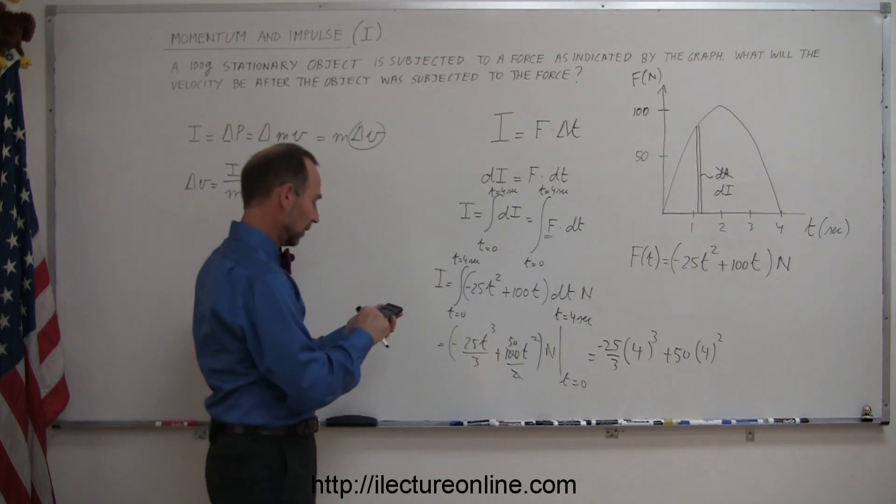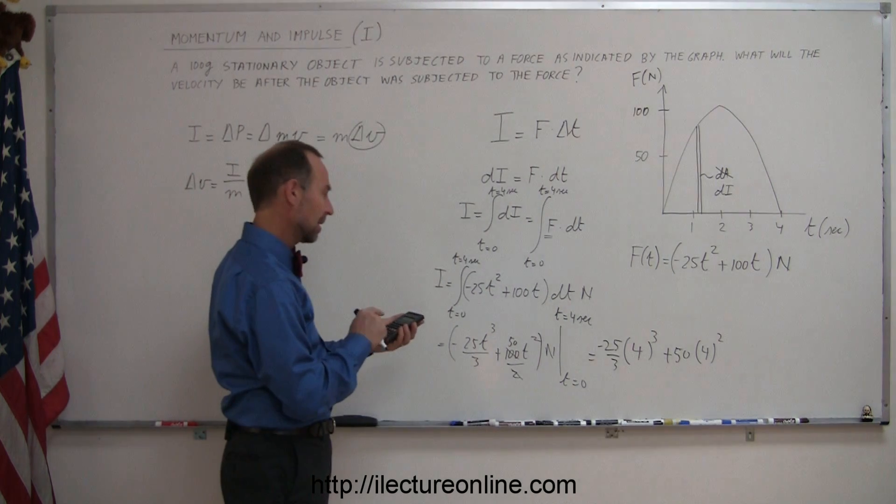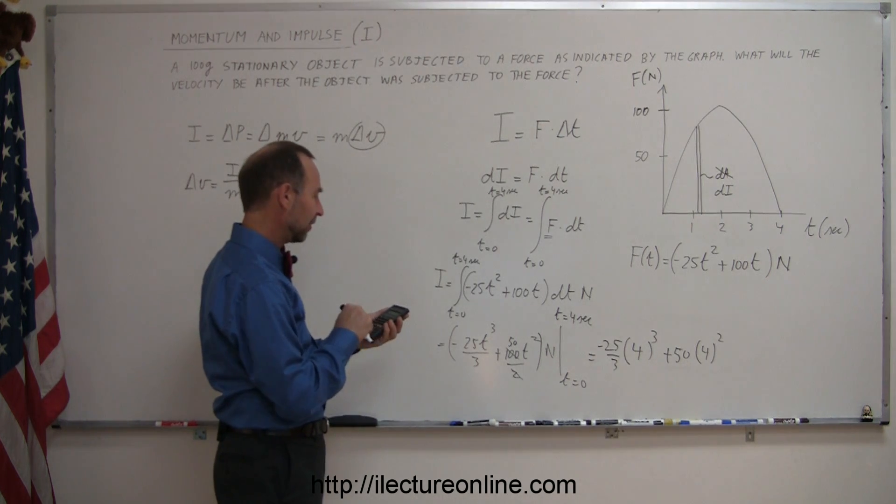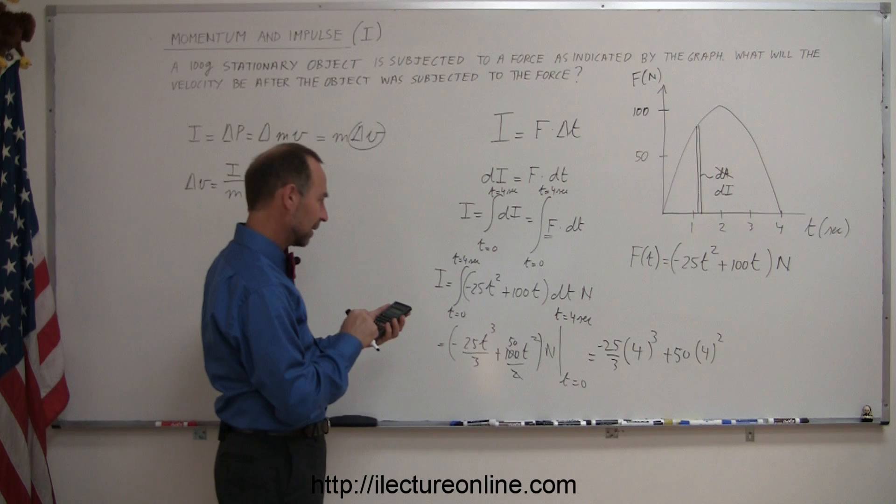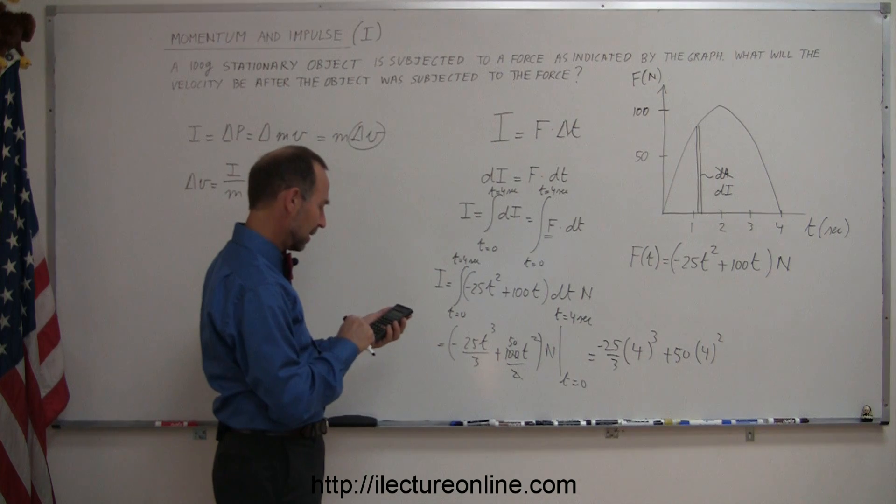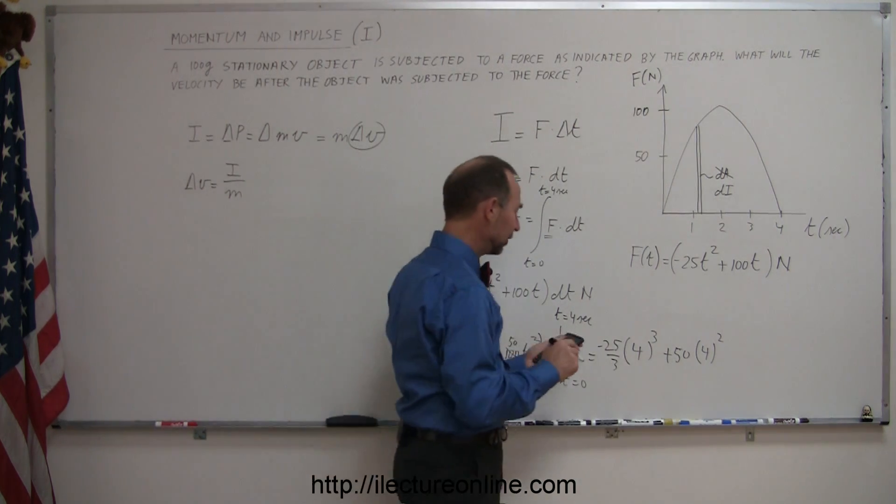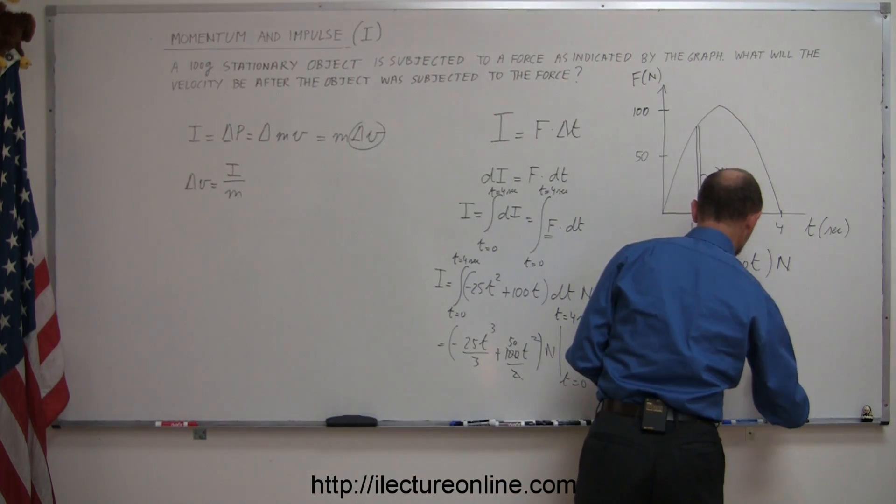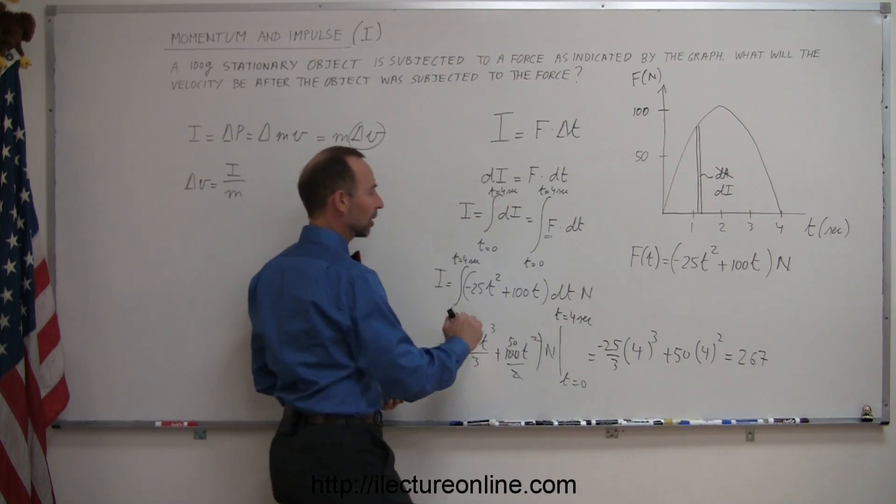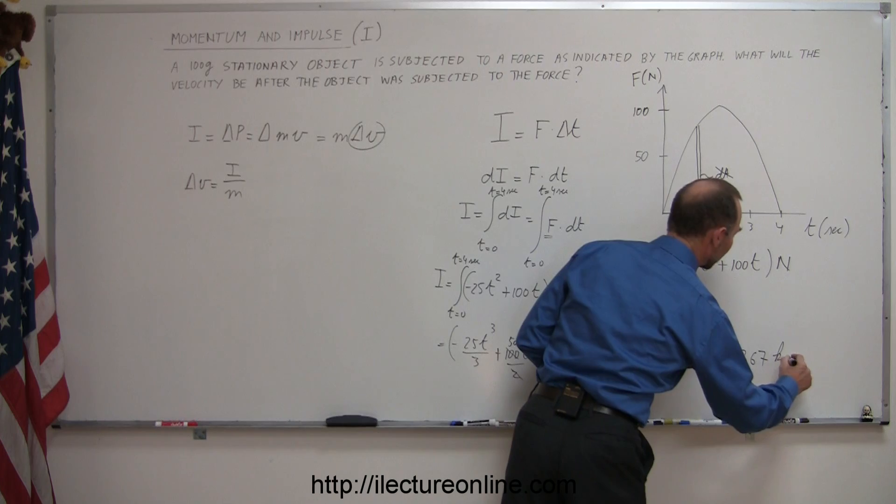Let me grab my calculator. That would be 16 times 50, and subtract from that 64 times 25 divided by 3, which equals 267. Remember that's the impulse, which is kilograms meters per second.